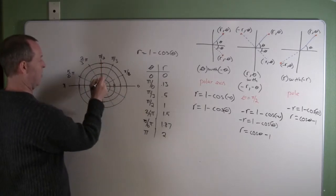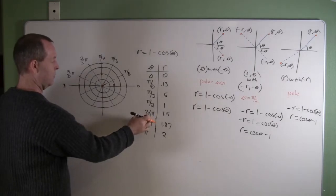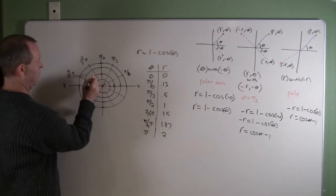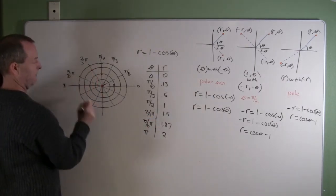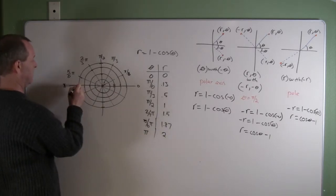On the pi halves, I'm out at 1, which is there. 2 thirds pi on that radius is 1.5, which is right there. On the 5 sixths, I'm out at 1.87, which is way out about there. And then pi is 2.